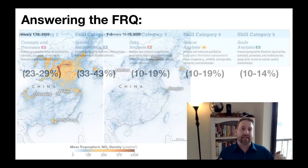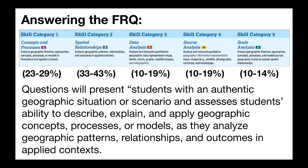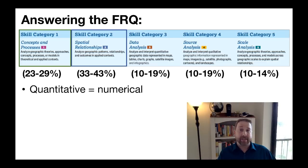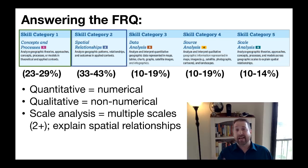Let's go back to the thinking skills from the CED. Questions will present students with an authentic geographic situation and assess ability to describe, explain, and apply geographic concepts, processes, or models, as they analyze geographic patterns, relationships, and outcomes in applied contexts. You can also expect to analyze quantitative data — information recorded or measured using numbers — as well as qualitative information, which is non-numerical, coming from observations or interviews. You can also expect to analyze information across geographic scales to explain a spatial relationship. For any skill, you will likely need to directly utilize the stimulus.